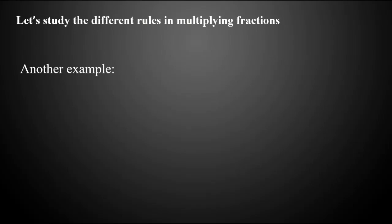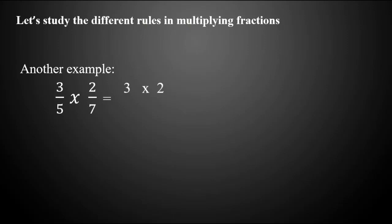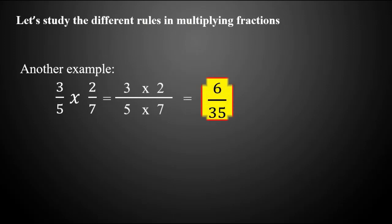Another example: three-fifths times two-sevenths. First, multiply the numerators: three times two. Then multiply the denominators: five times seven. Three times two equals six, and five times seven equals thirty-five. So three-fifths times two-sevenths is equal to six over thirty-five.